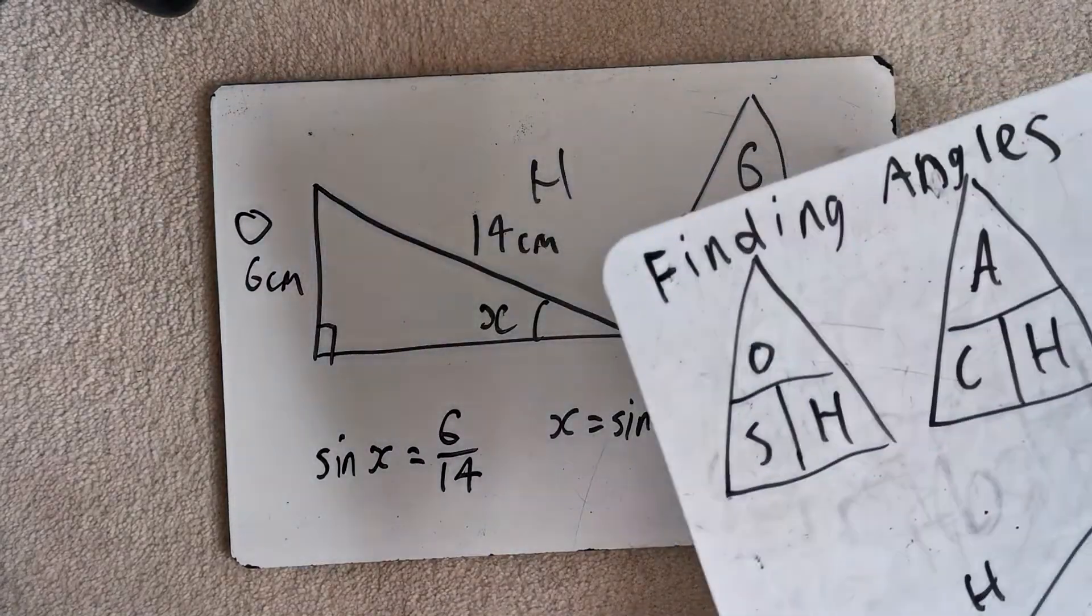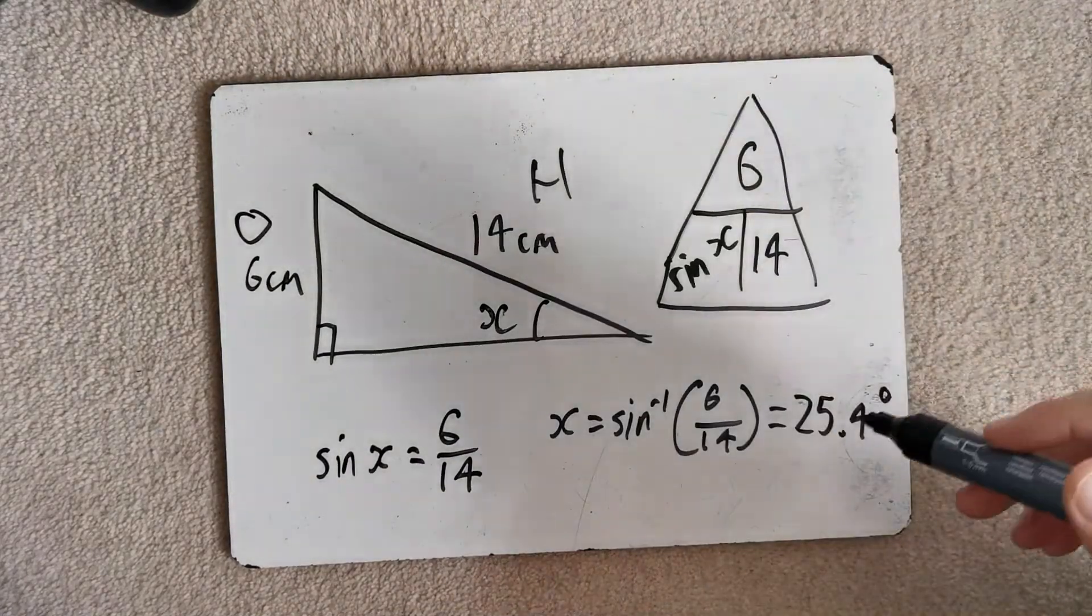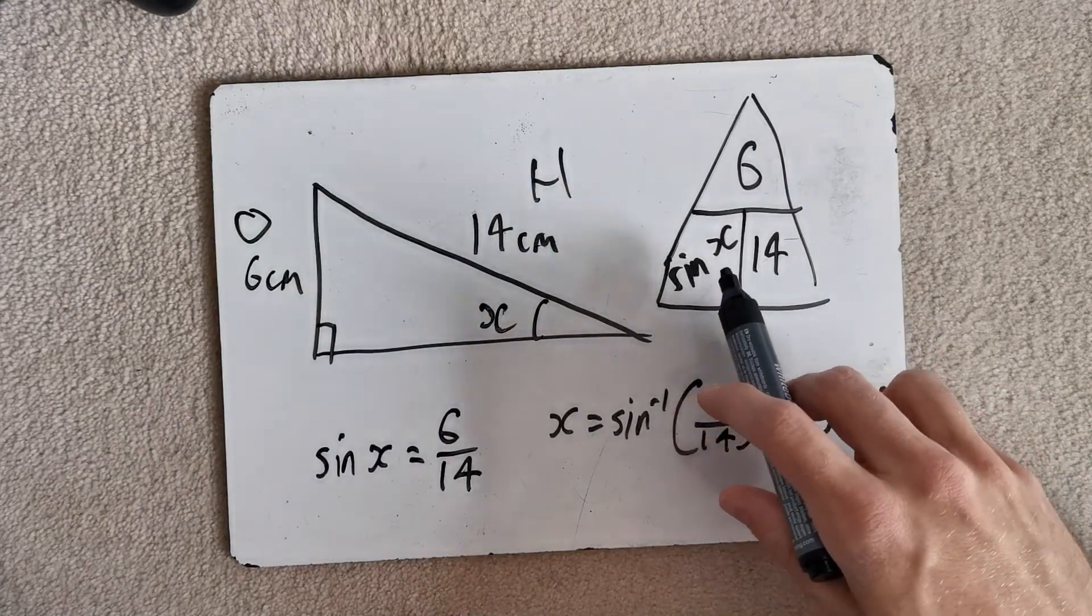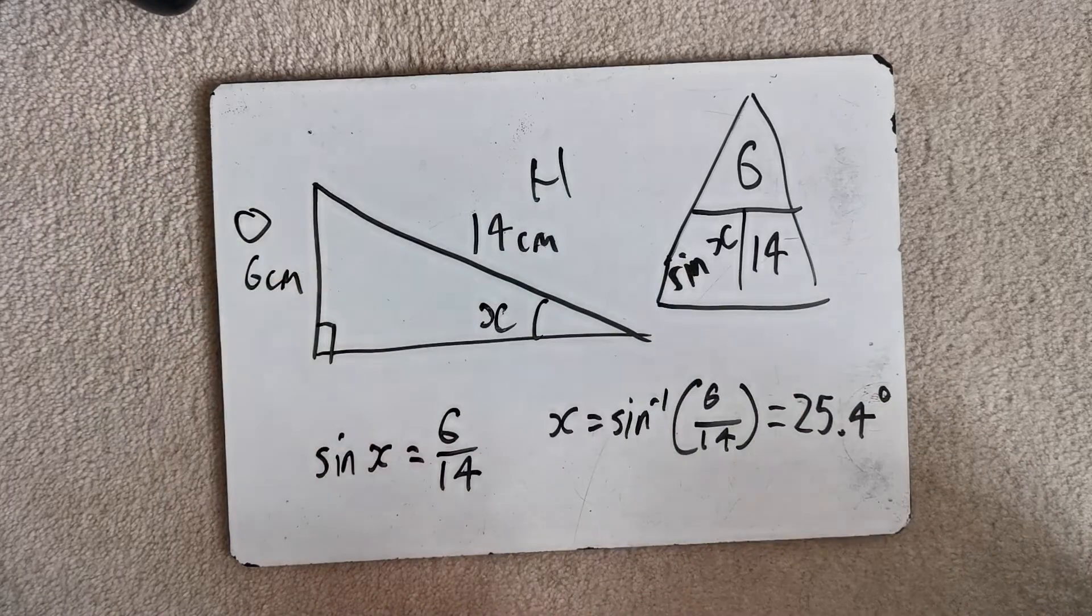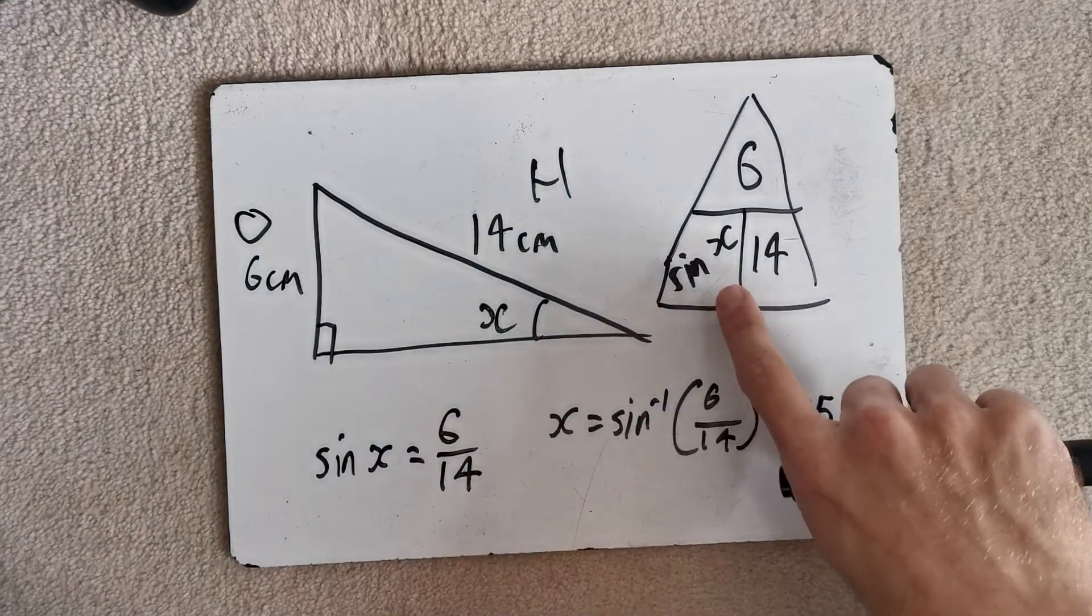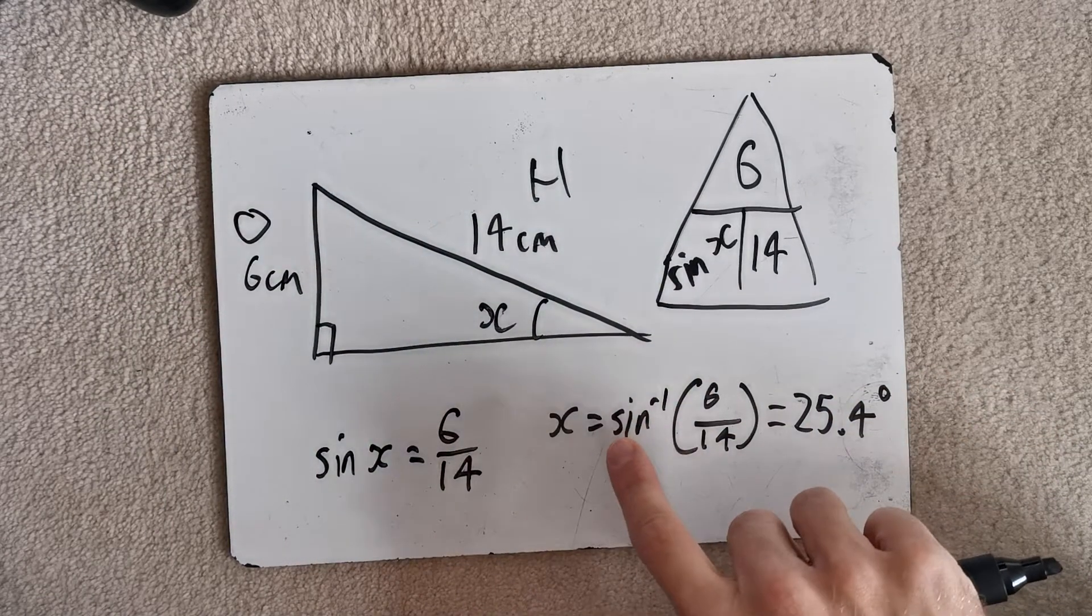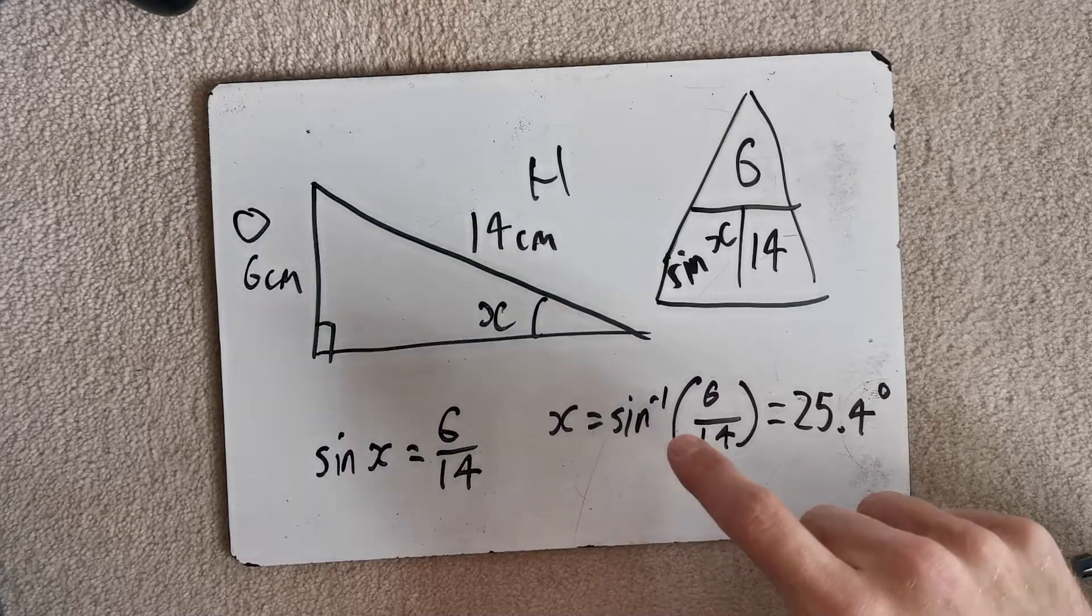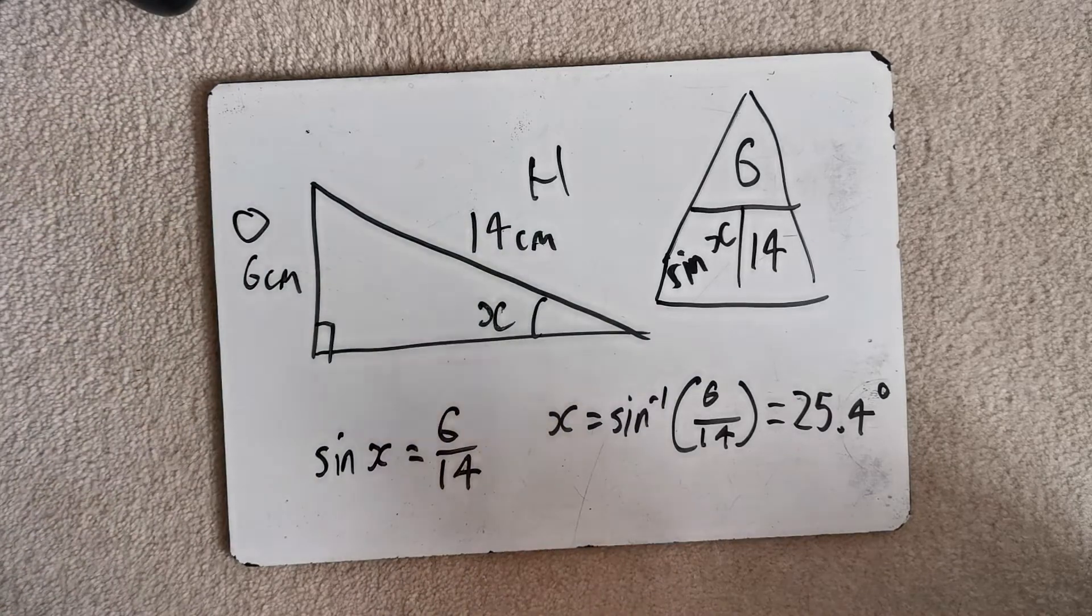Then we've got to realise that we're finding an angle. So step four is do the calculation. So when we're finding the angle, we've got to use shift sine.